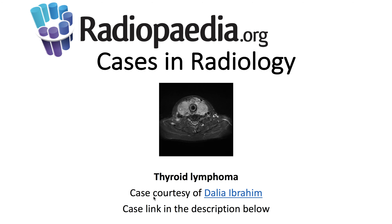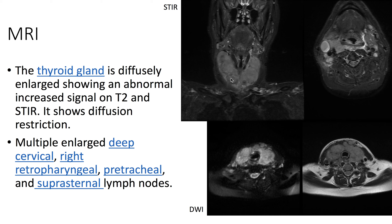Presentation: we have a 50-year-old female presenting with anterior neck swelling. On MRI, we see that the thyroid gland is diffusely enlarged, showing abnormal increased signal on STIR as well as on T2. It is diffusion-restricted on DWI, and we can also appreciate some lymphadenopathy.